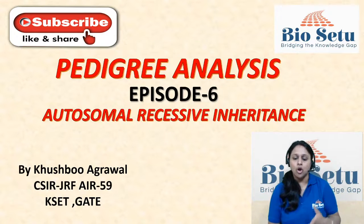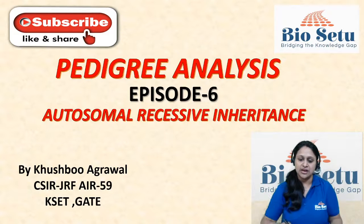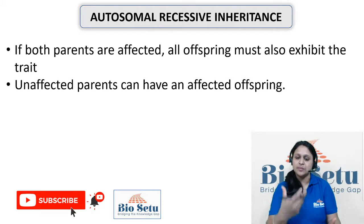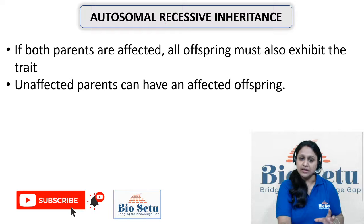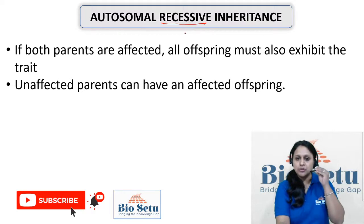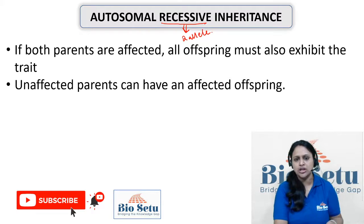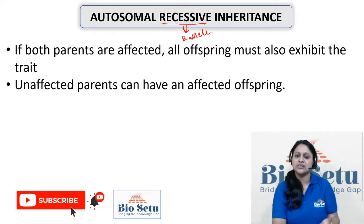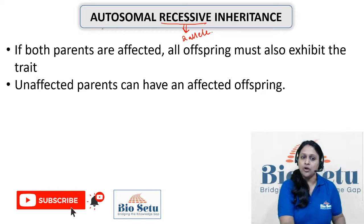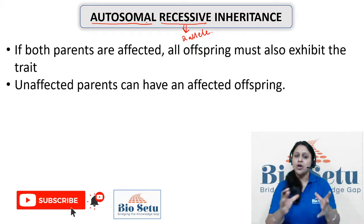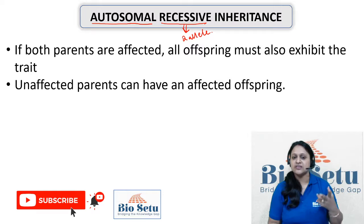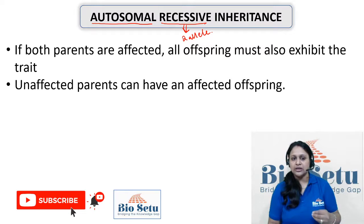In the last video we studied about Autosomal Dominant Inheritance. Now we are going to talk about Autosomal Recessive Inheritance. The recessive allele is responsible for this trait, and since it is recessive, two alleles are necessarily required for the trait to be expressed — it expresses only in homozygous condition. This allele is present on the autosomal set of chromosomes.